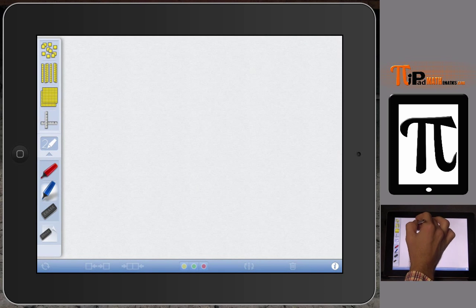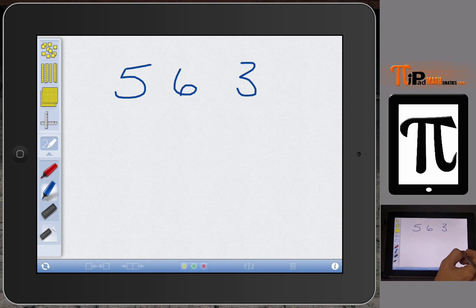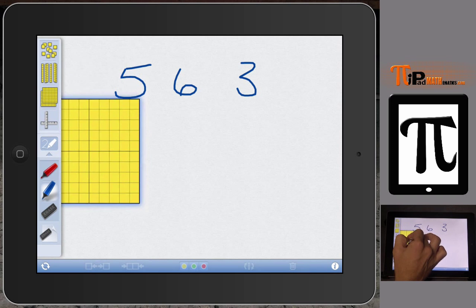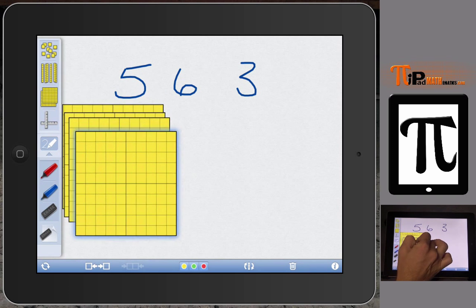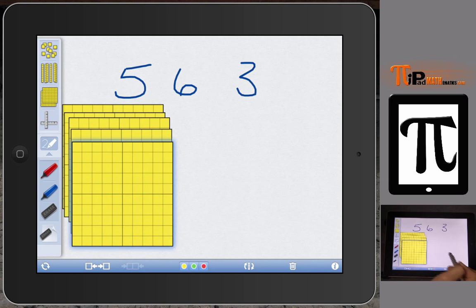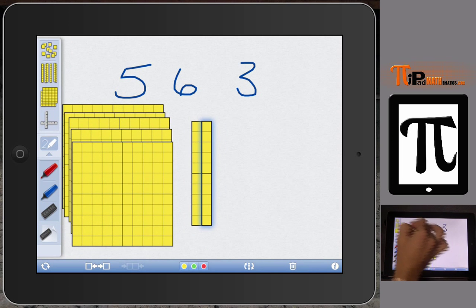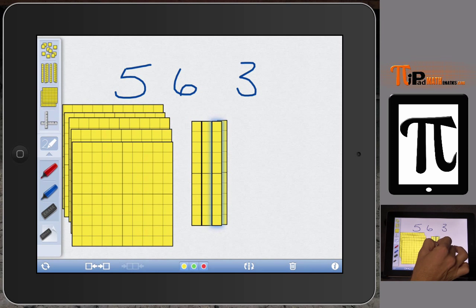And we do another number. Let's say five hundred sixty three. Then we can go with our, we have one two three four five hundreds, and six tens, and then three ones.